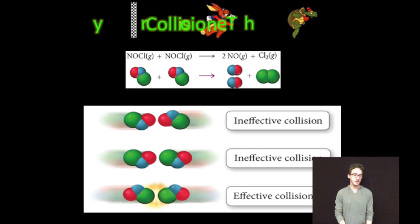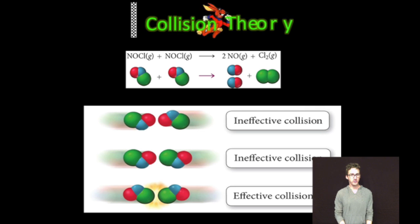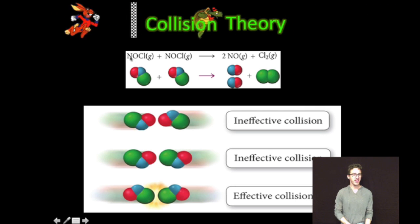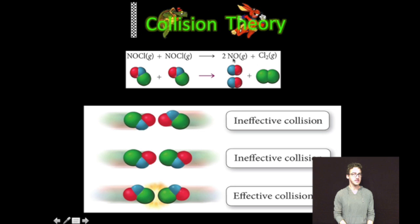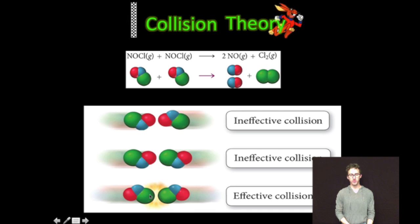Check out the thrilling image that's on your screen and in your notes that also drives home this idea. In order for the compound NOCl to form nitrogen monoxide and chlorine, they have to react with the correct orientation. In this case, with the two chlorine atoms colliding with one another. Any other orientation will not result in the formation of the products.